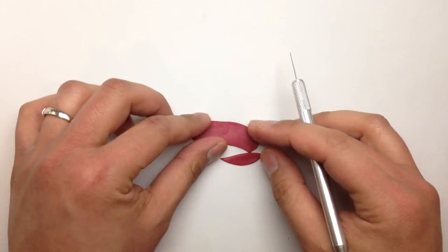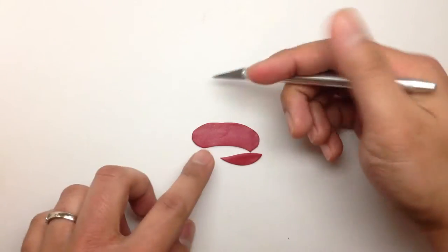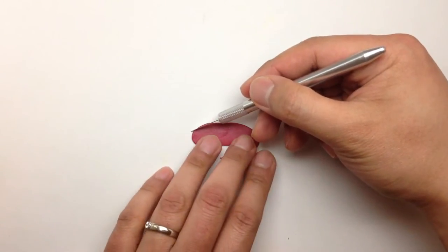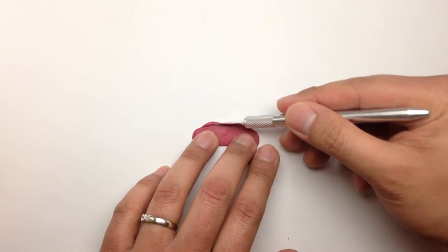To make the dress, run the red clay to a pasta machine or clay roller. Trim it to make a curve.